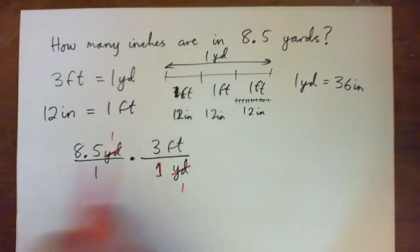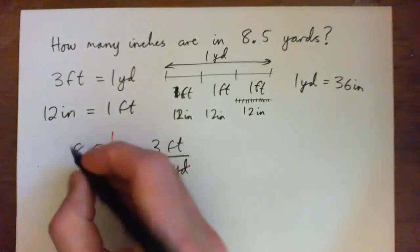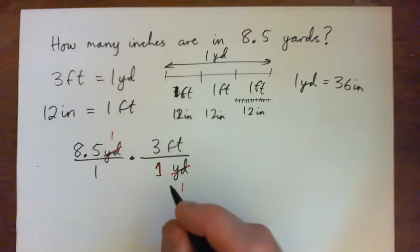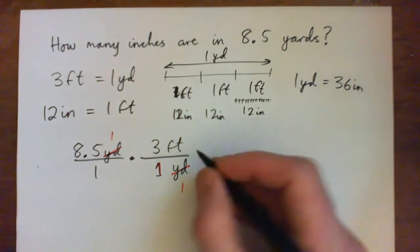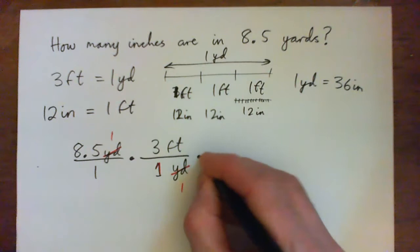And now I'm in feet. So if I go 8.5 yards times three, which is like 25 and a half, 25 and a half feet are contained in 8.5 yards.